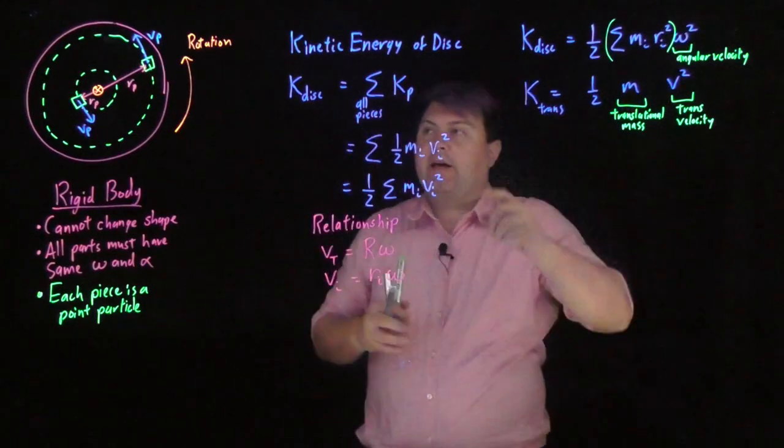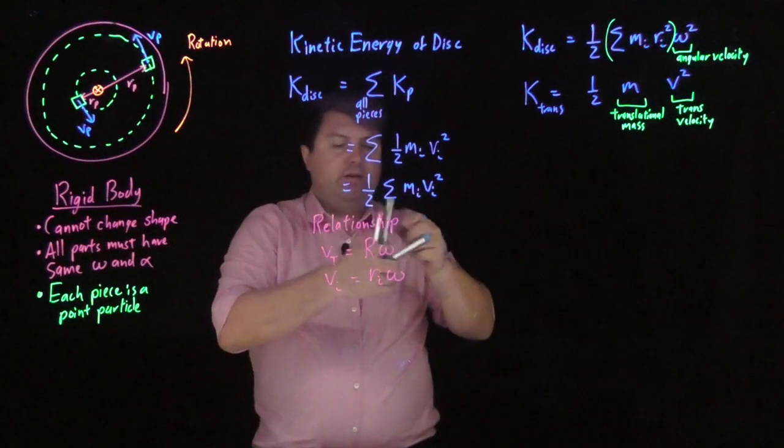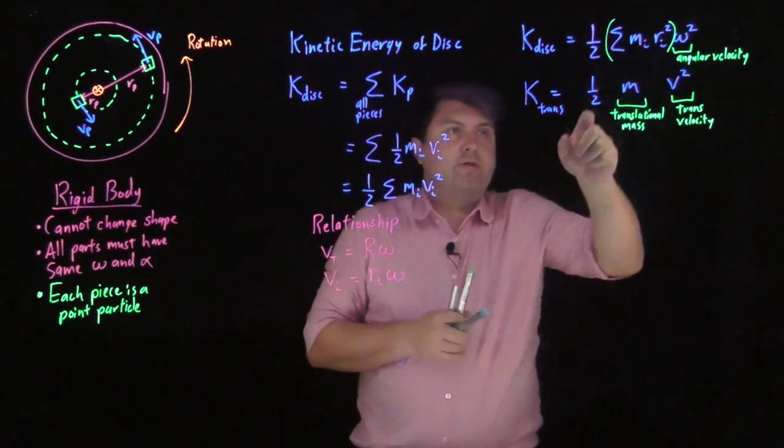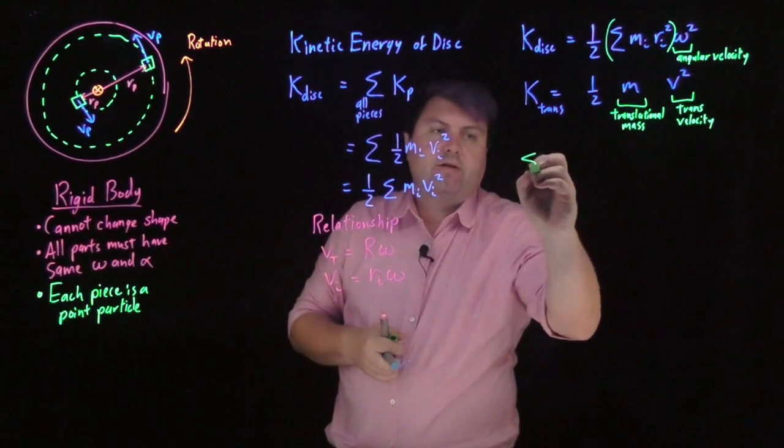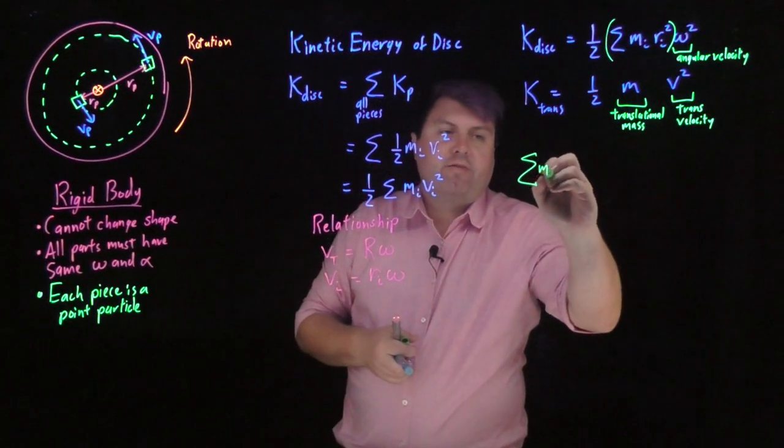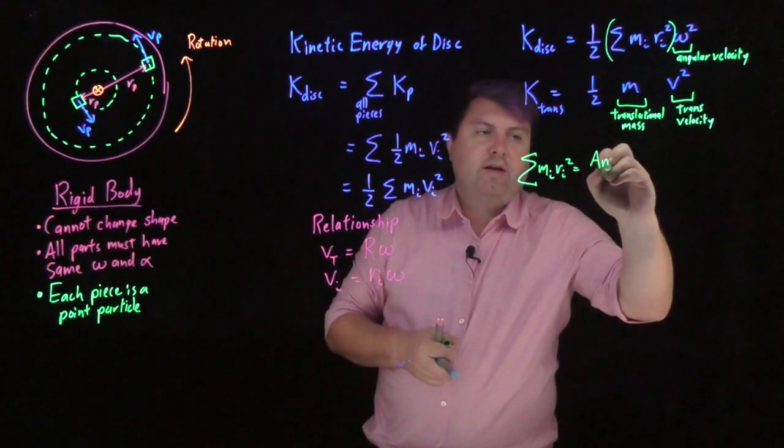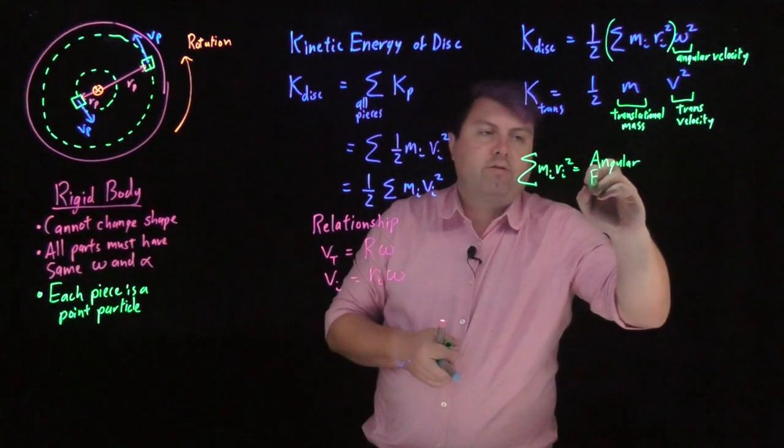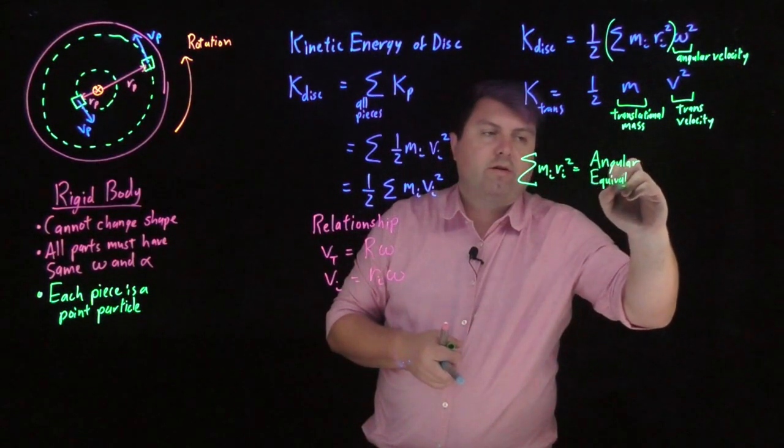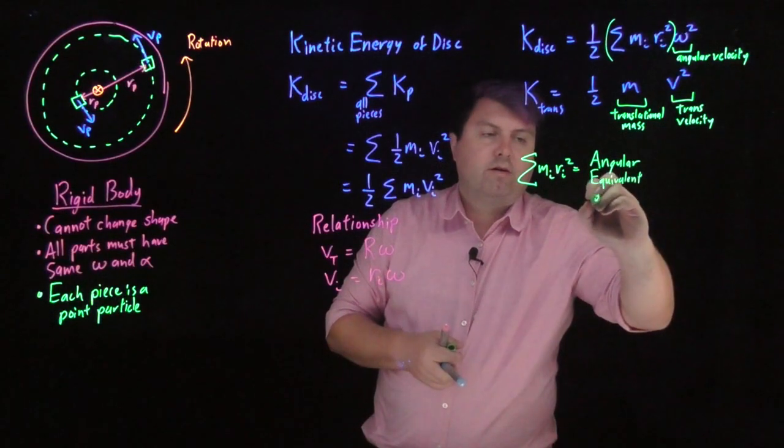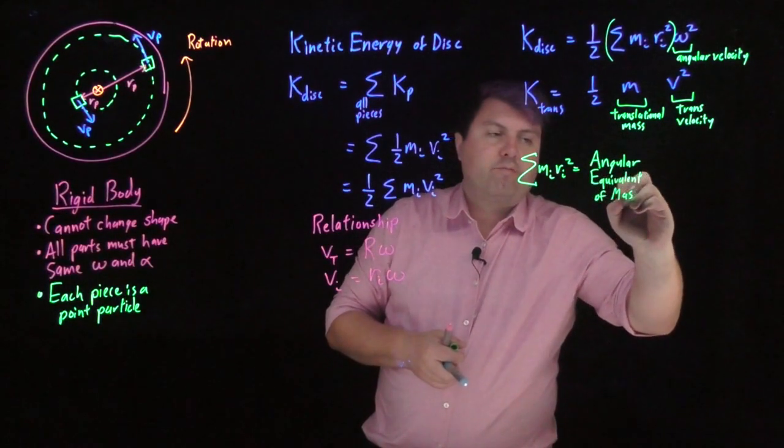And this is my kinetic energy for things rotating. So we're going to call this whole concept—the sum of m_i r_i squared—the angular equivalent of mass.